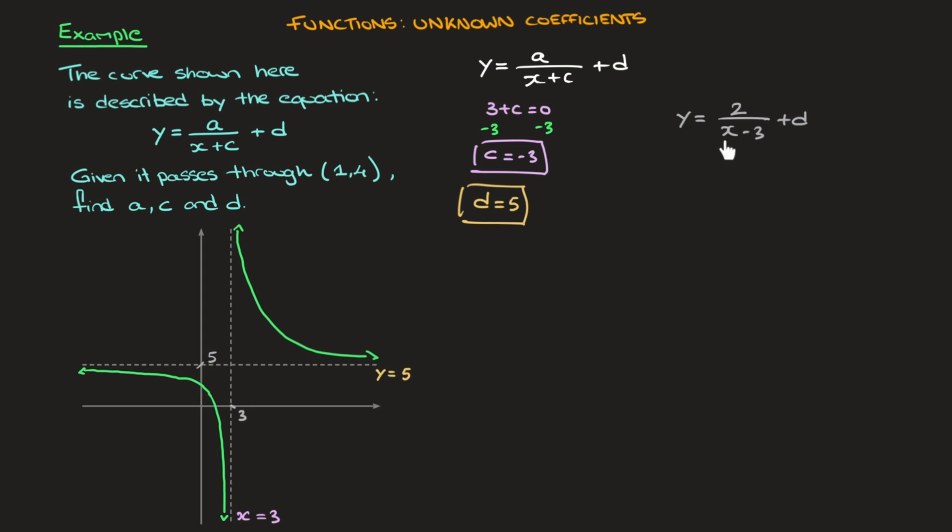And so if I were to replace x by something really big, then the y value we get should get really close to 5. And to try and convince you of that, let's say I were to replace x by a thousand. Then we'd have y equals 2 over 1,000 minus 3 plus d. And that would be y equals 2 over 997 plus d. And you can go ahead and check, but rounding to three significant figures, that leads to y equals 0.00201 plus d.